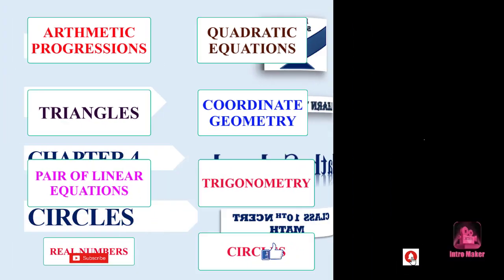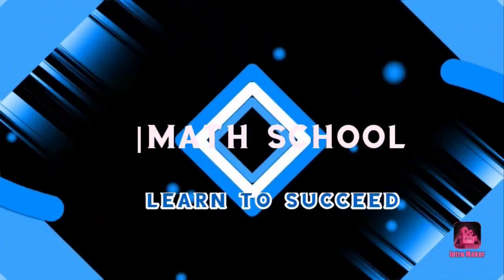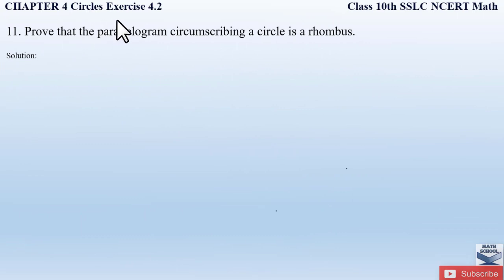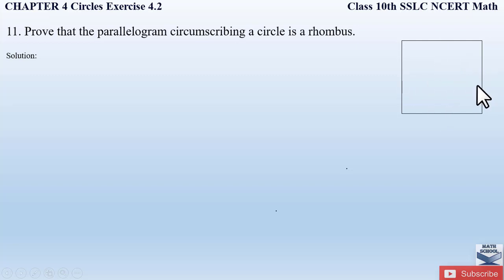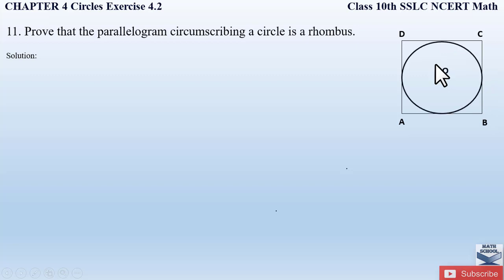So now let us quickly begin with the video. Question number 11 from exercise 4.2, chapter 4 circles says: prove that a parallelogram circumscribing a circle is a rhombus. A similar type of question we solved in question number 8, where we proved a circle circumscribed in a quadrilateral. But here we have to prove it for a parallelogram. Let us assume a parallelogram and name it ABCD, circumscribing a circle with center O.